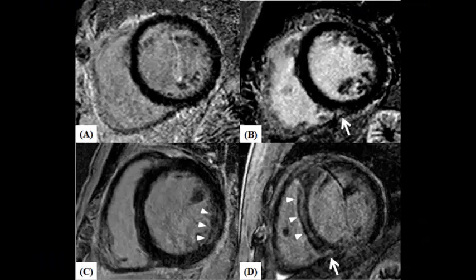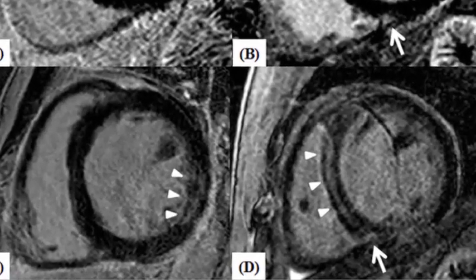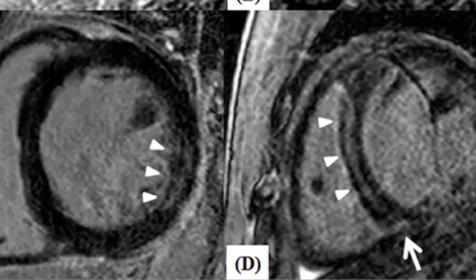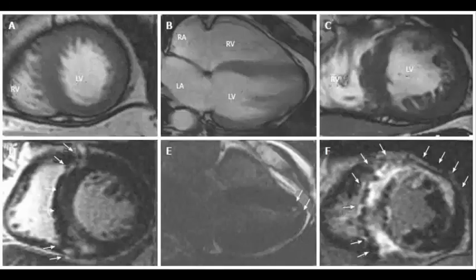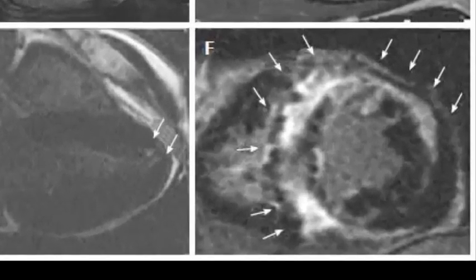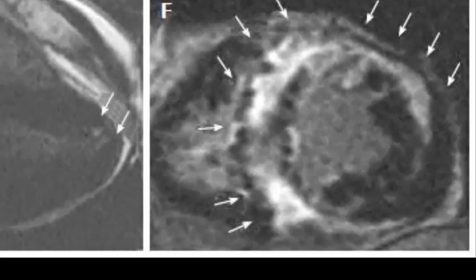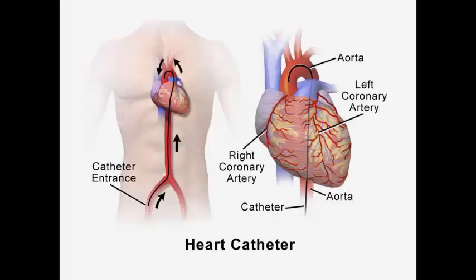When a contrast agent such as gadolinium is injected, areas of myocardial hypoperfusion can be identified with better spatial resolution than nuclear medicine techniques. Later redistribution — so-called delayed enhancement — can be used to identify myocardial scarring and fibrosis. This helps in selecting patients for revascularization procedures or identifying those with myocardial infiltration such as sarcoid heart disease and right ventricular dysplasia.